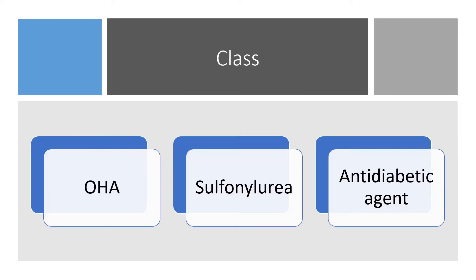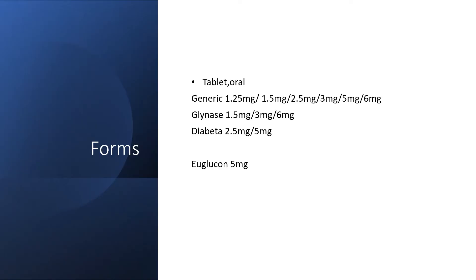Glybenclamide belongs to the class of medications known as sulfonylureas. It is an oral hypoglycemic agent, or simply defined as an anti-diabetic agent. It can appear in various forms: as a generic tablet for oral use in doses of 1.25 mg, 1.5 mg, 2.5, 3, 5, or 6 mg. Glyinase tablets come in 1.5, 3, or 6 mg. Diabeta tablets come as 2.5 or 5 mg, or Glycron at 5 mg.